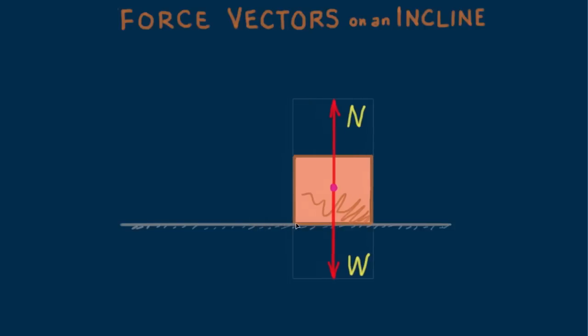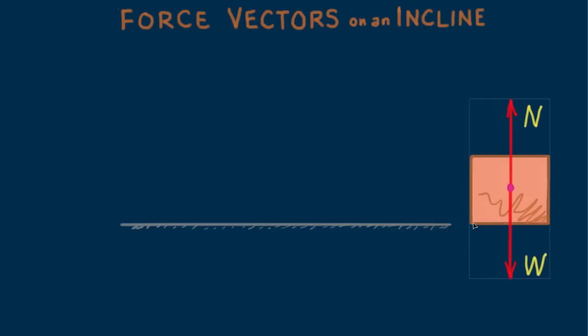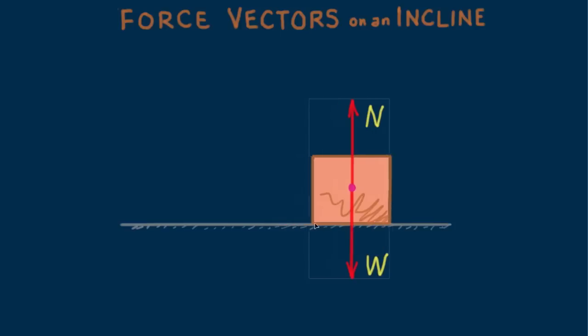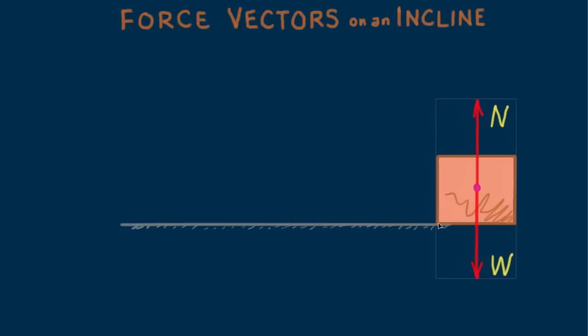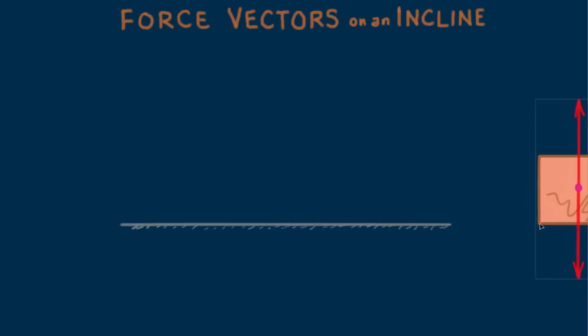If the block slides across a friction-free surface at constant velocity, would the vector diagram be different? The answer is no. In accord with the law of inertia, once moving, no force in its direction of motion is required. The vector diagram is complete. The block slides in dynamic equilibrium.